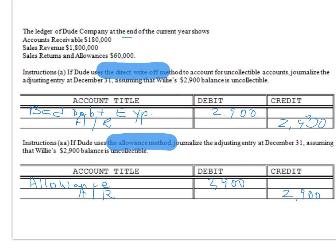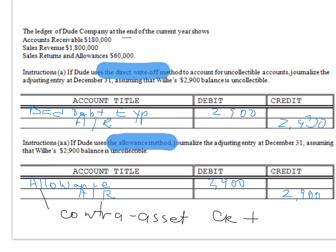As a reminder, what type of account is Allowance for Doubtful Accounts? Allowance is a contra asset. Because it's a contra asset account, its normal balance is a credit — that's where the account goes up. Therefore, if you debit this account, it's the same as subtracting the allowance. This makes sense: accounts receivable went bad, so you use or reduce your allowance by that amount because you used it up.